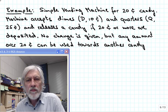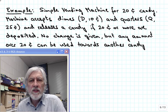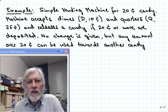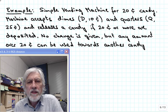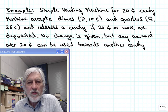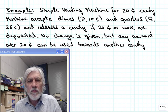This is part 2 of the state minimization video for finite state machines. We are taking a look at an example here of a 20-cent candy dispenser that accepts dimes and quarters, and dispenses 20-cent candy and gives credit if there is too much money put in.